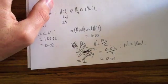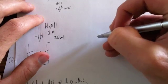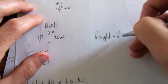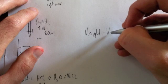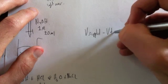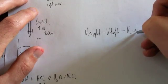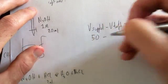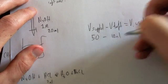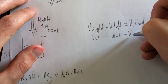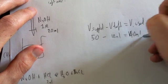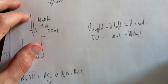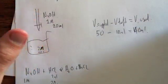So therefore, we do volume supplied take away volume left equals volume used. And therefore, volume supplied was 50, volume left was 10 ml, volume used equals 40 ml. So if we used 40 ml, how many moles is that? So therefore, we write down our overall equation.